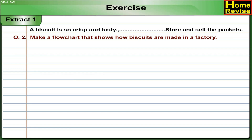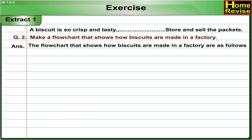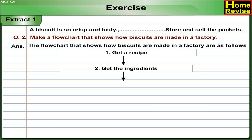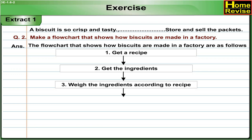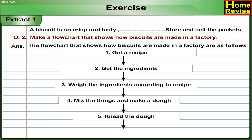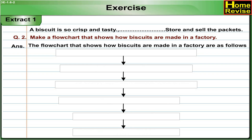Question 2: Make a flow chart that shows how biscuits are made in a factory. Answer — The flow chart is as follows: 1. Get a recipe. 2. Get the ingredients. 3. Weigh the ingredients according to the recipe. 4. Mix the things and make a dough. 5. Knead the dough. 6. Roll out the dough.